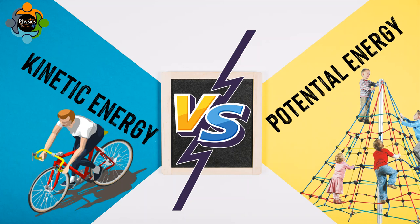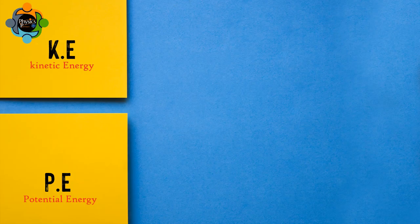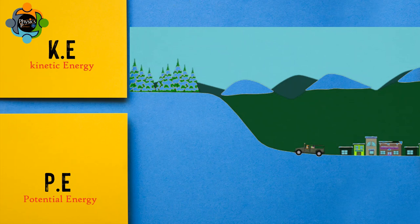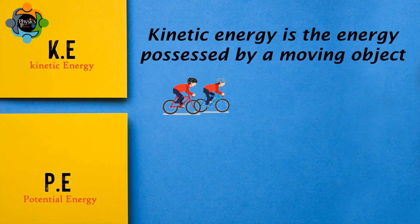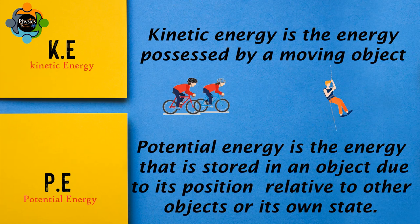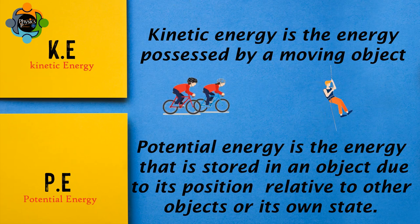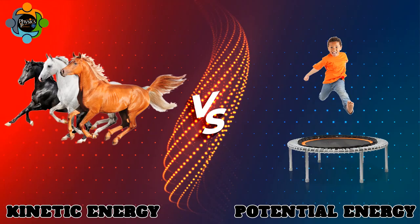To start our discussion, let's take a moment to define what kinetic energy and potential energy are. Kinetic energy is the energy possessed by a moving object, while potential energy is the energy stored in an object due to its position relative to other objects or its own state.